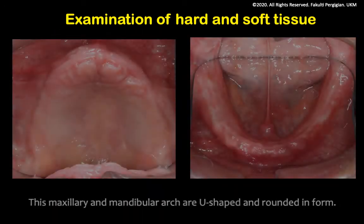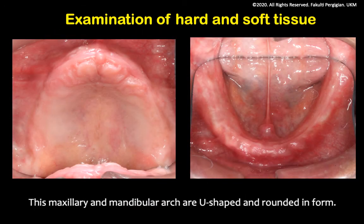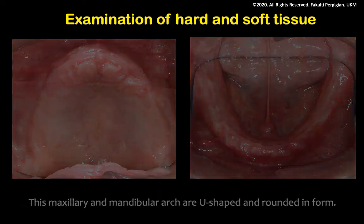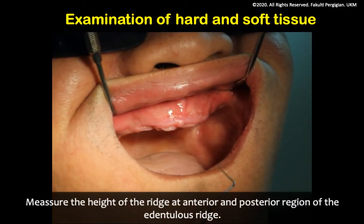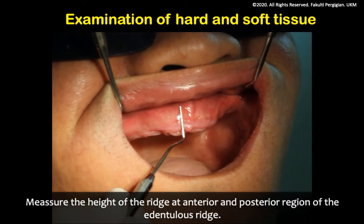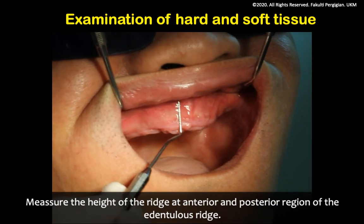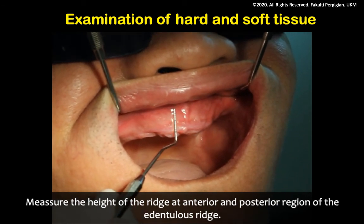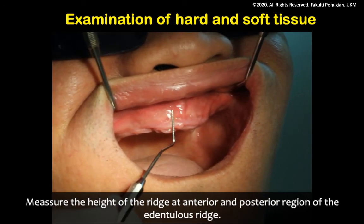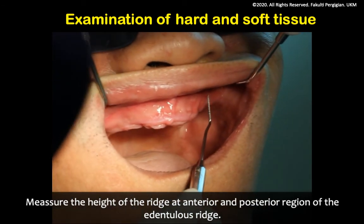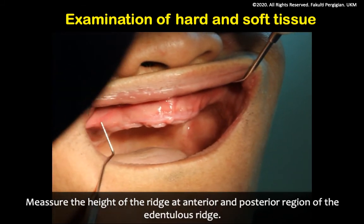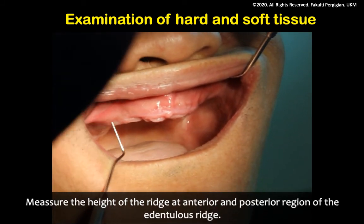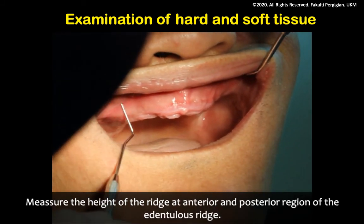In this case, the maxillary and mandibular arches are U-shaped and rounded in form. Lastly, measure the height of the ridge at the anterior and posterior regions of both the maxillary and mandibular edentulous ridges.